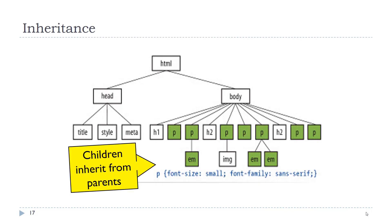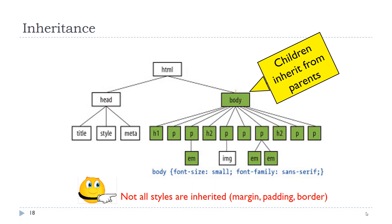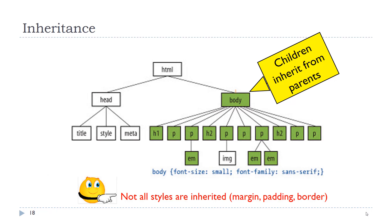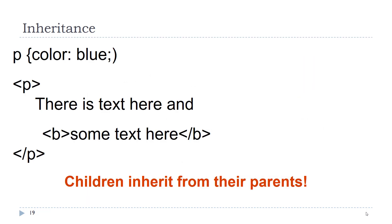In CSS, we have this concept of inheritance. Children inherit from parents. So any styles applied to a parent would also apply to a child element or a descendant element inside that parent element. If we were to apply a style to the body tag, it would be inherited by every element. Not all styles are inherited — when we learn about the box model styles, they are not inherited. Your basic text styling properties are inherited. Here's an example of inheritance: we have a style rule applied to the P element, and in the HTML you see that P element contains a child B element, and that style would be inherited as well.